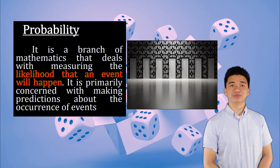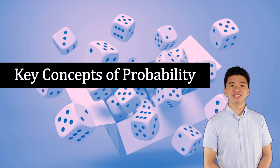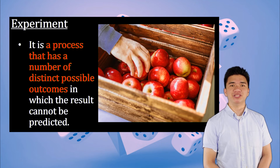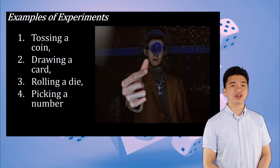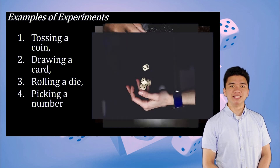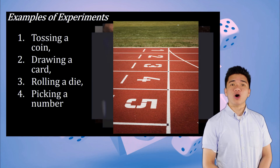In the study of probability, certain terminologies need to be understood. The first is Experiment — a process that has a number of distinct possible outcomes in which the result cannot be predicted. Examples include tossing a coin, drawing a card, rolling a die, and picking a number. All of these are experiments, each with many possible results.